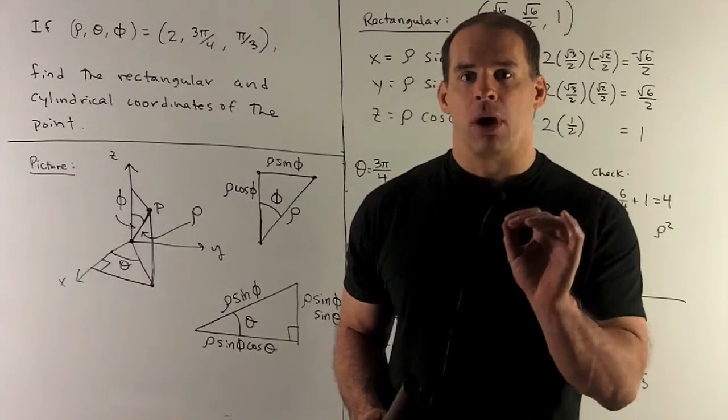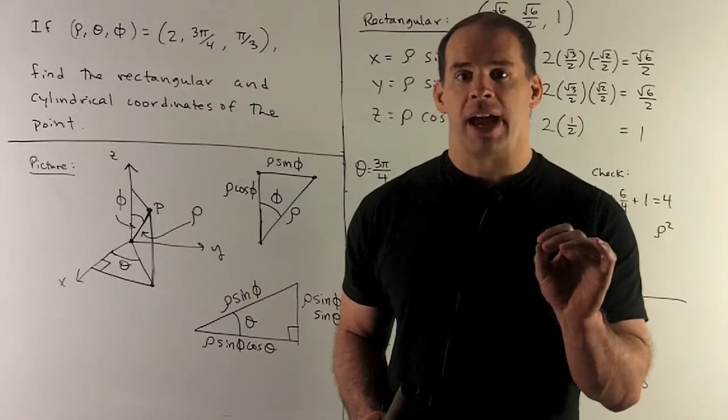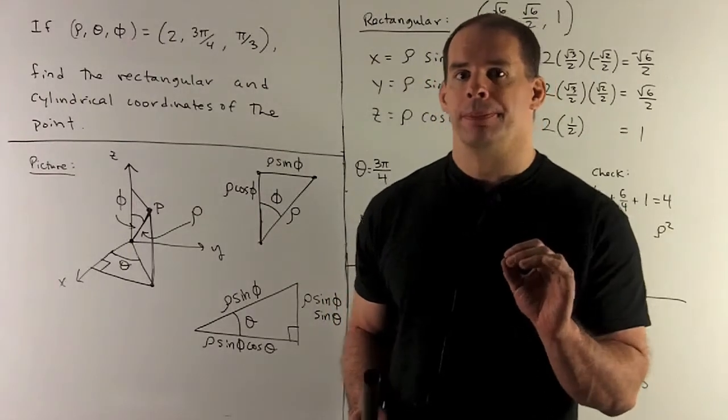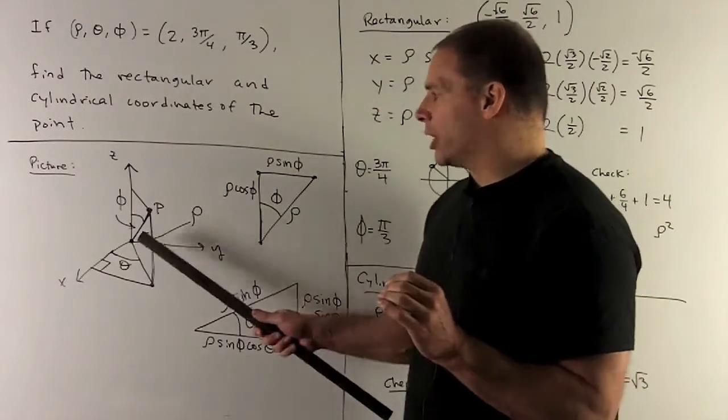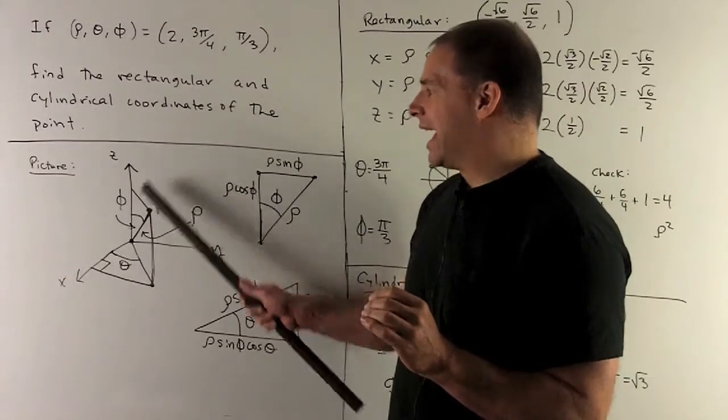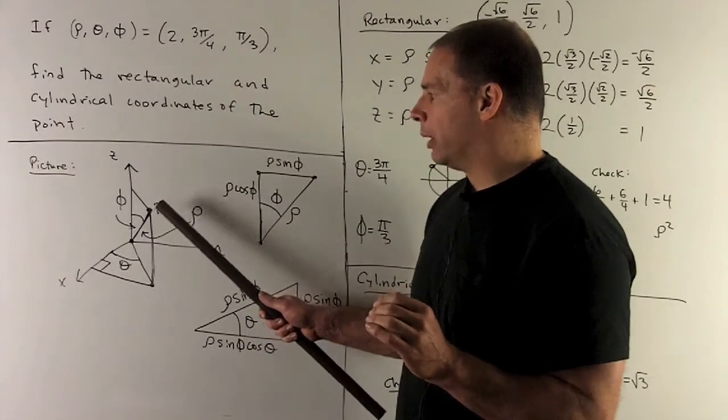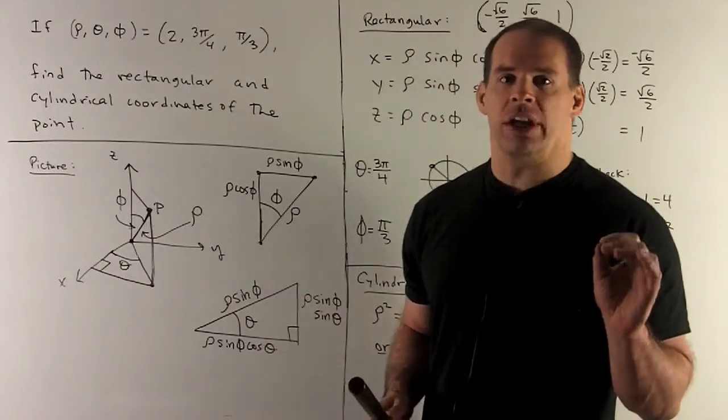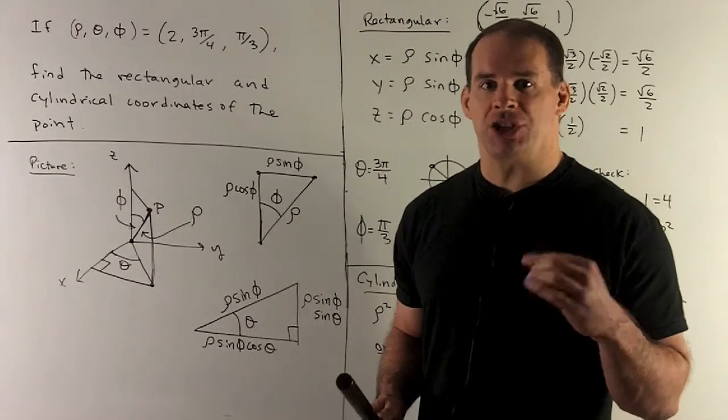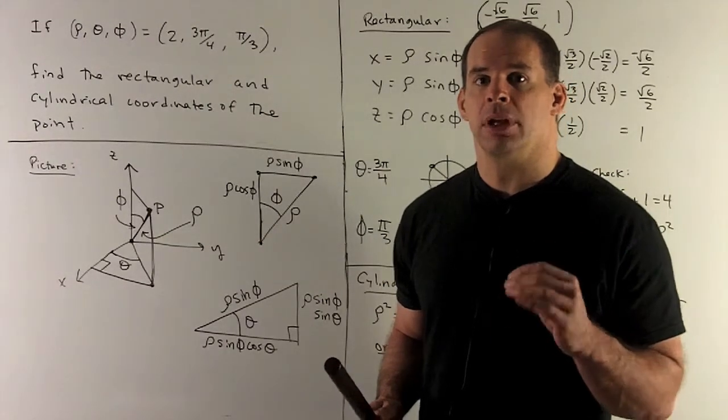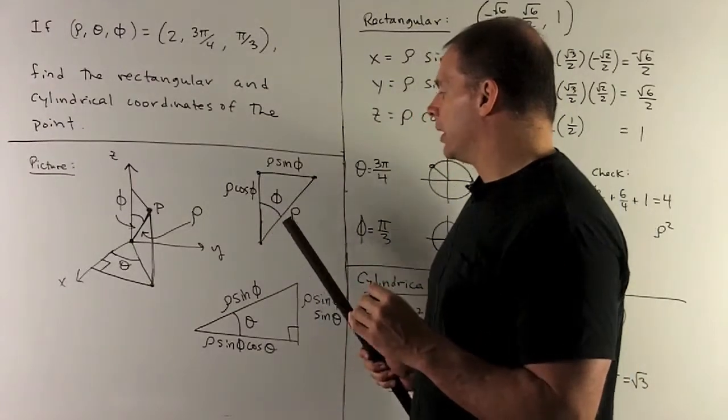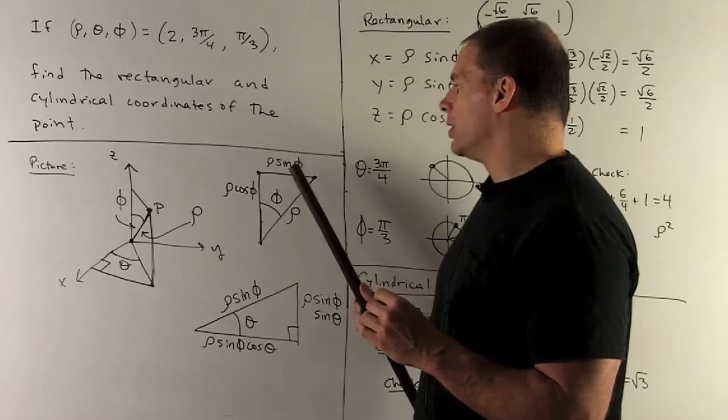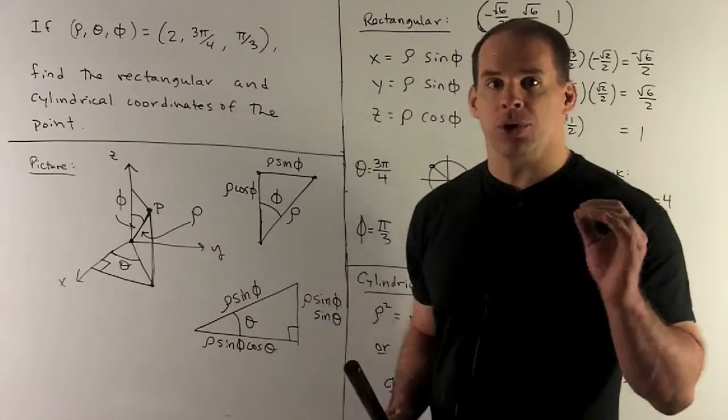Now, how do we go from spherical to rectangular or cylindrical? We're going to need two right triangles to pull things apart. First, we're going to take the right triangle formed by the z-axis, and then come down to our point P. We'll assume that phi is acute, meaning less than 90 degrees. When it's bigger than 90 degrees, you just change the position of your angle. Here's our angle phi. Our hypotenuse is rho. The opposite is rho sine phi. The adjacent is rho cosine phi.